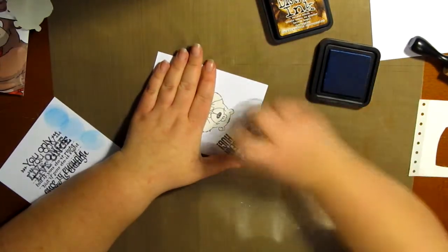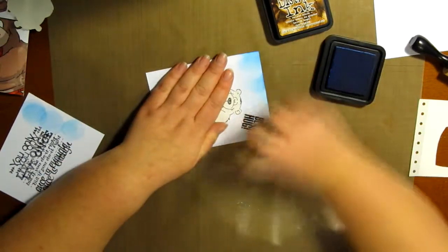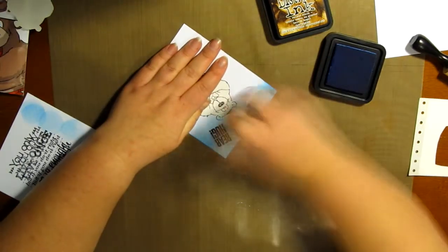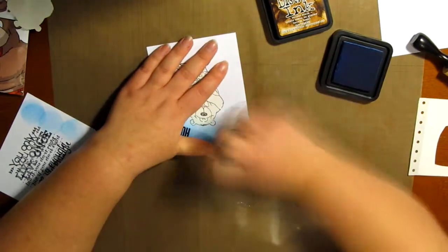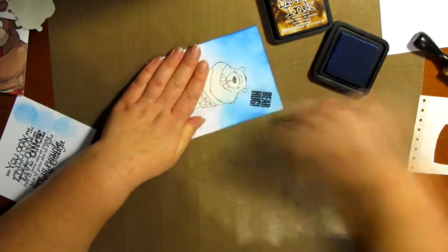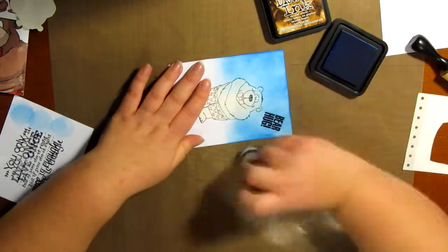So I'm taking my distress ink, it is the salty ocean, and I'm just kind of blending it in as best as I can from the outside in. I do have this sped up because for me blending takes a very, very, very long time because I'm still so very new at it.